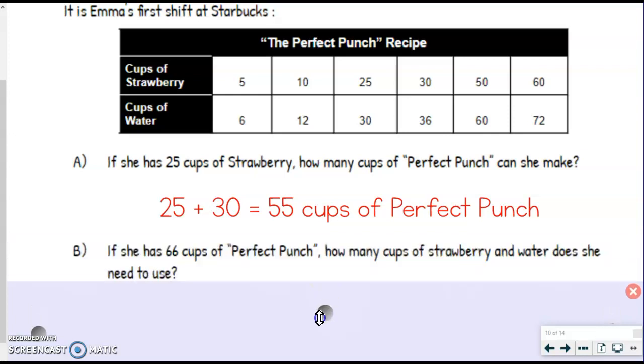Let's try question B. It says, if she has 66 cups of Perfect Punch, how many cups of strawberry and water does she need to use? Well, you might notice if you look at our table, there is no 66 on there anywhere. That's because it's 66 cups of Perfect Punch, not strawberry or water. So what we need to do is figure out which column adds up to 66 cups, because then we can break it down and figure out how much of that is strawberry and how much of that is water. It's kind of the opposite of what we just did.